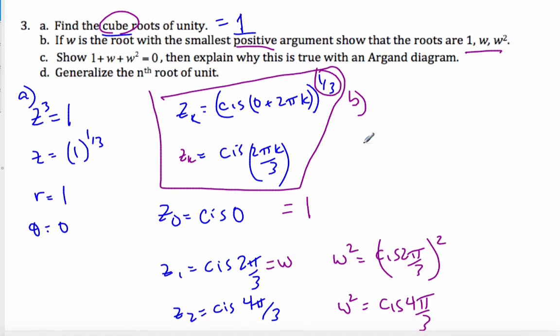So if I do it generally speaking, that means zk is going to be cis 0 plus 2πk to the power of 1 over n. Applying that, I get cis 0 goes away, 2πk over n, and n will be whichever root you're looking for.